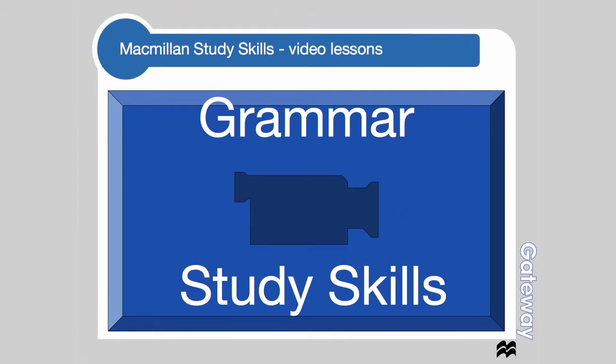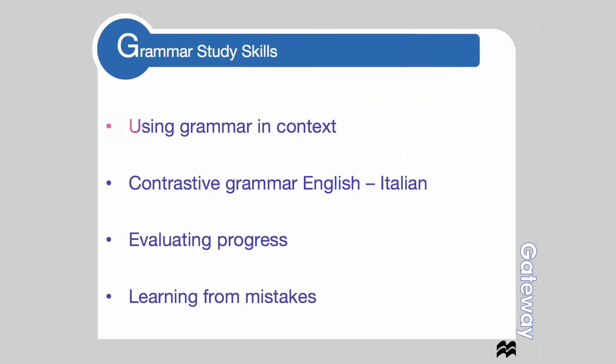Welcome to the second in the series of Macmillan Study Skills video lessons. The first lesson was about developing study skills. In this lesson we're going to be looking at developing grammar study skills. Today we're going to be looking at four aspects of grammar study skills: grammar in context, contrastive grammar English-Italian, evaluating progress, and learning from mistakes.